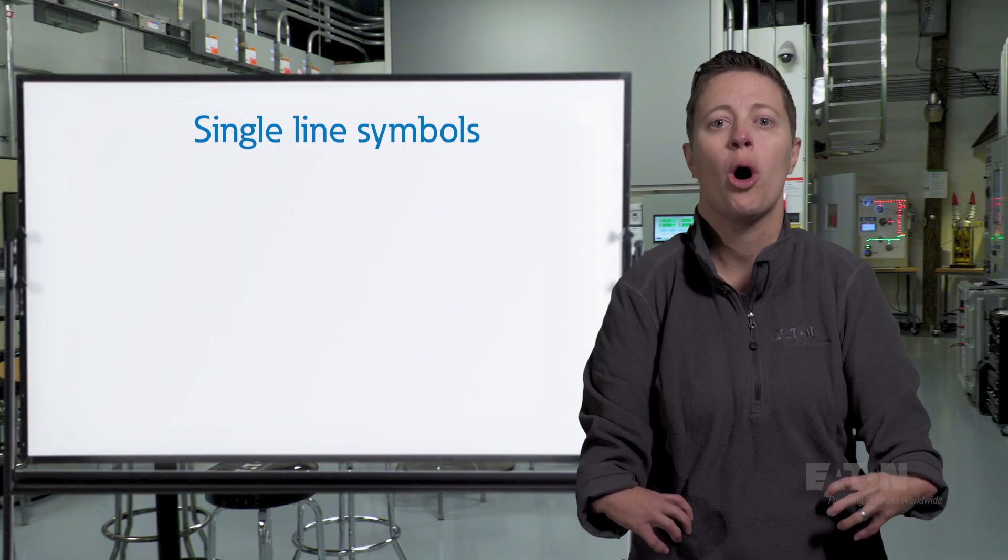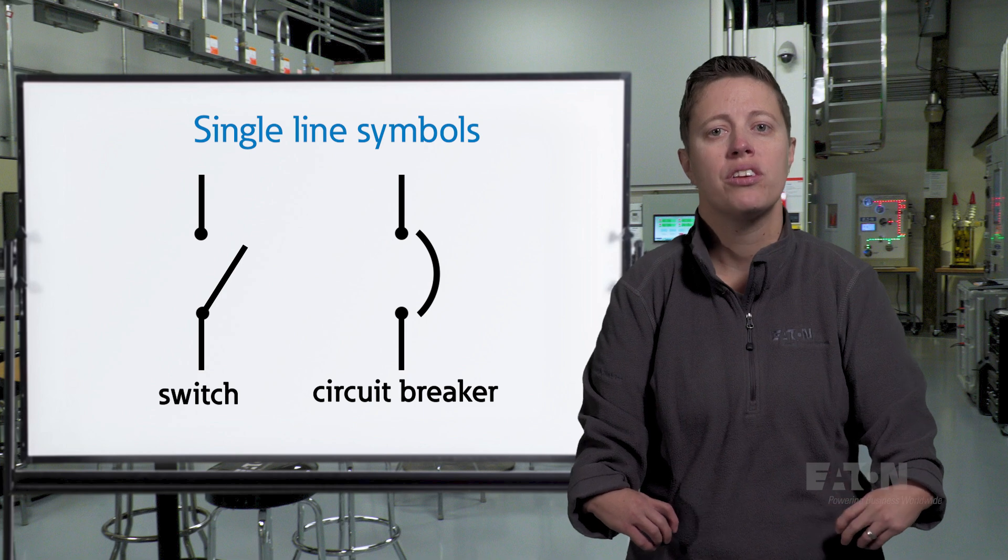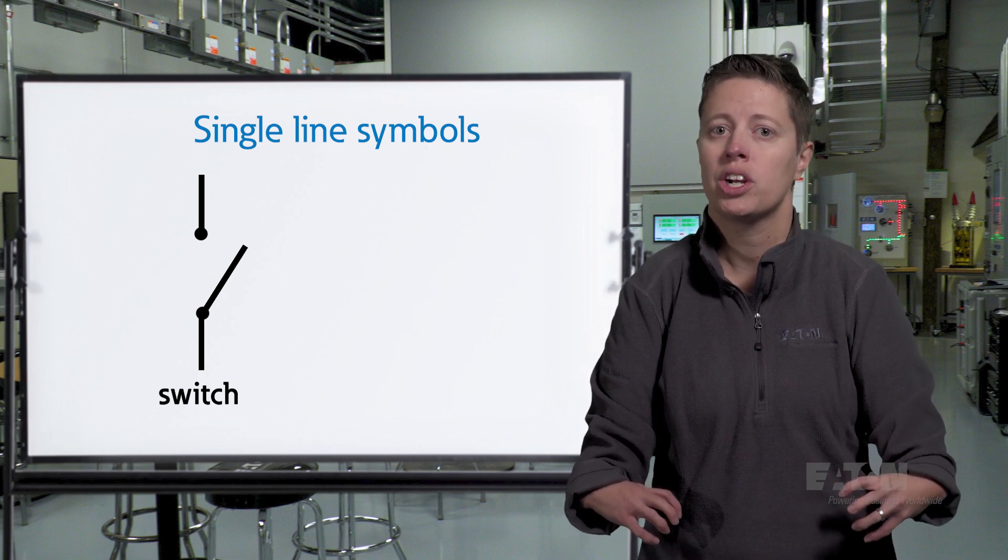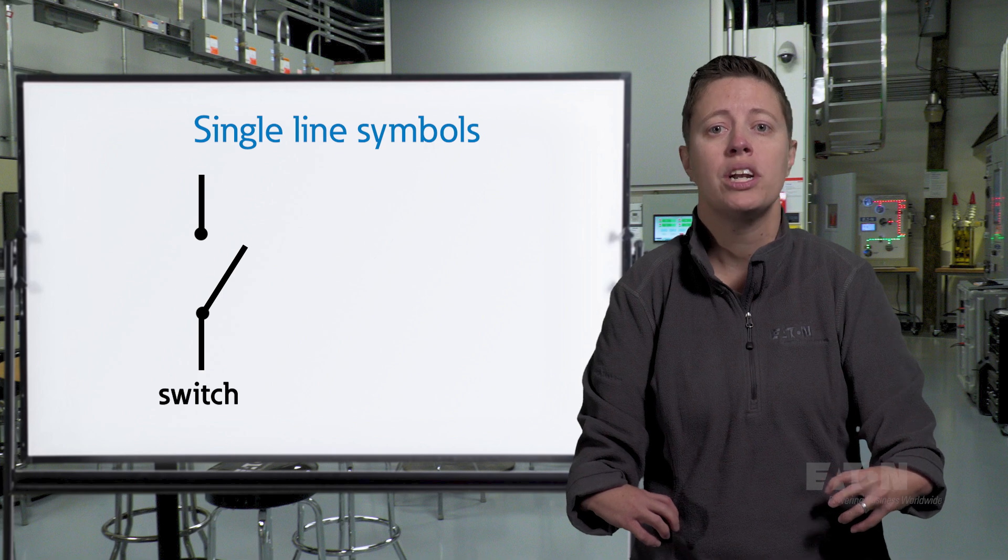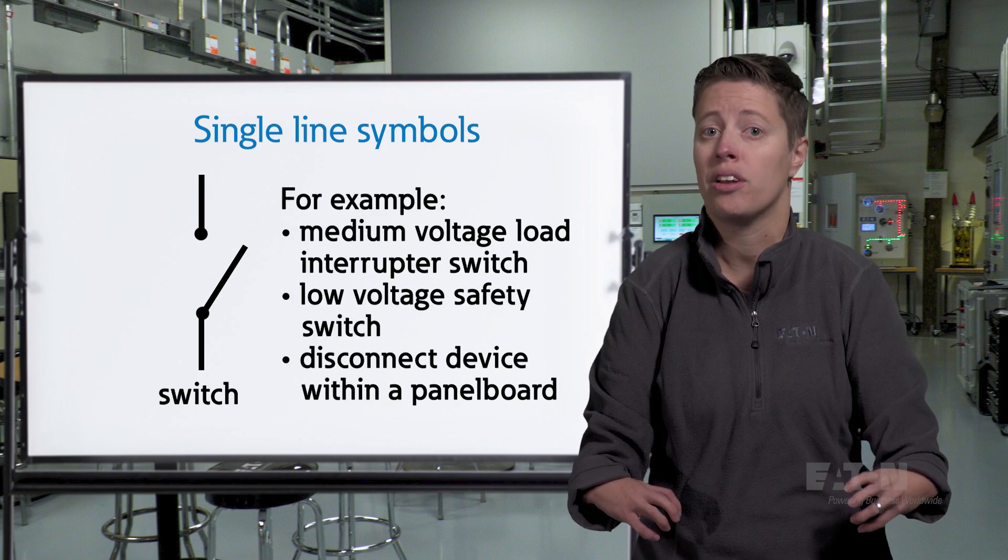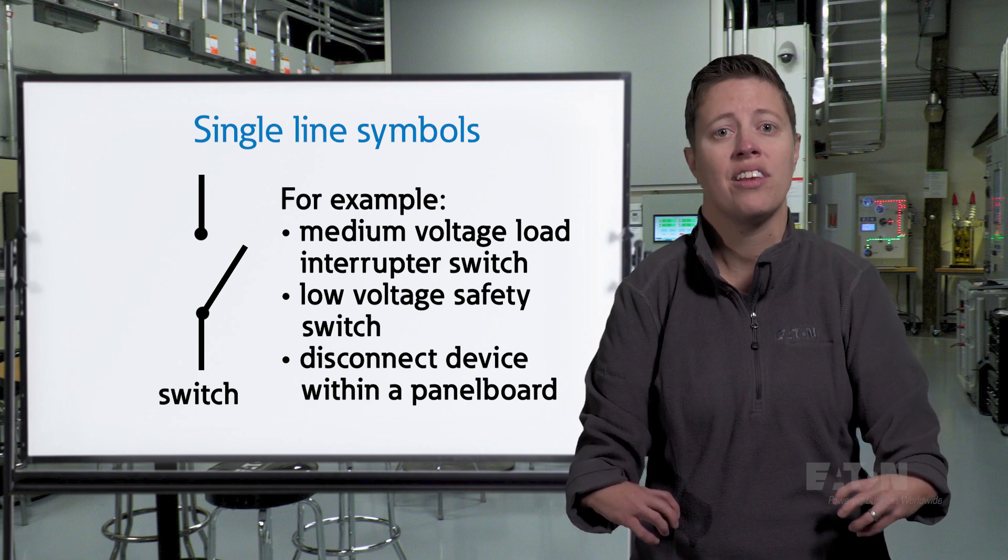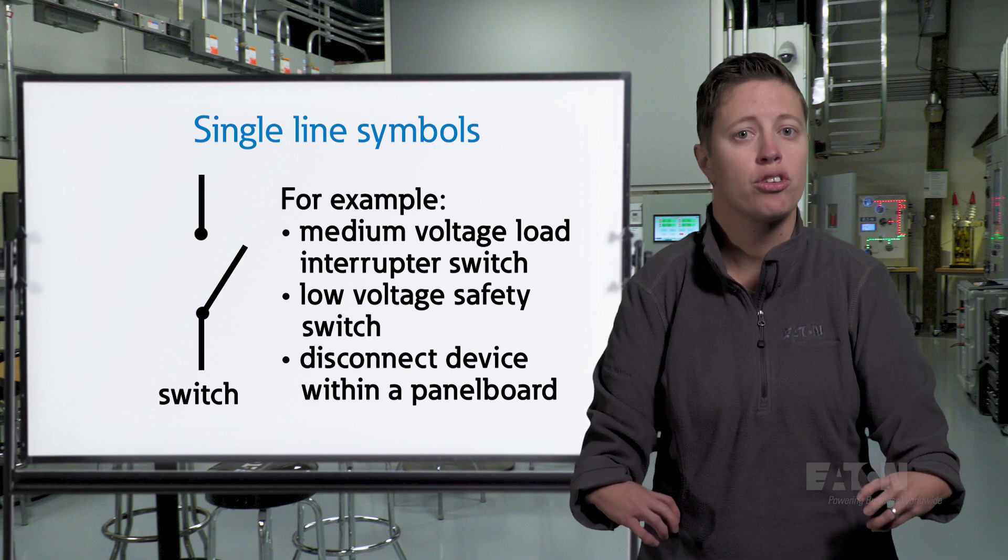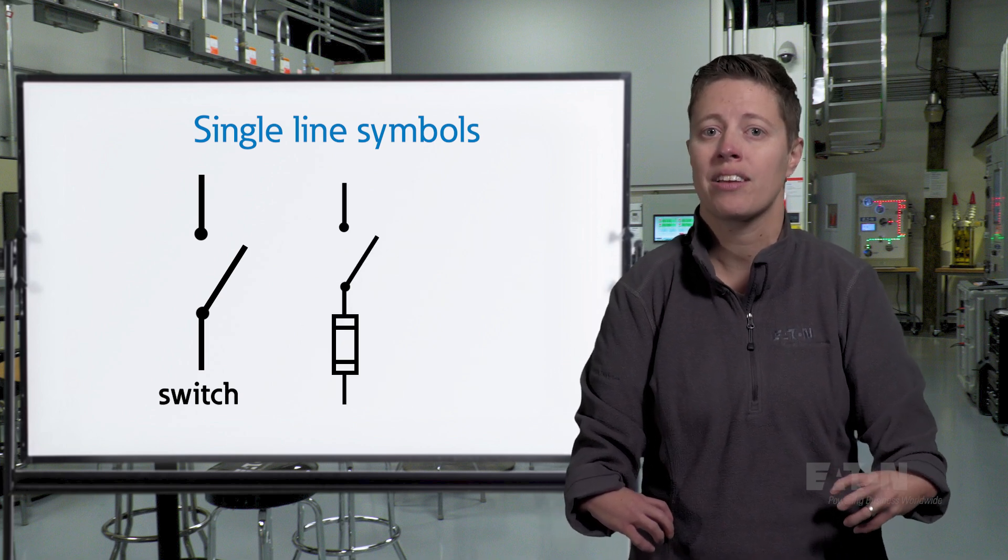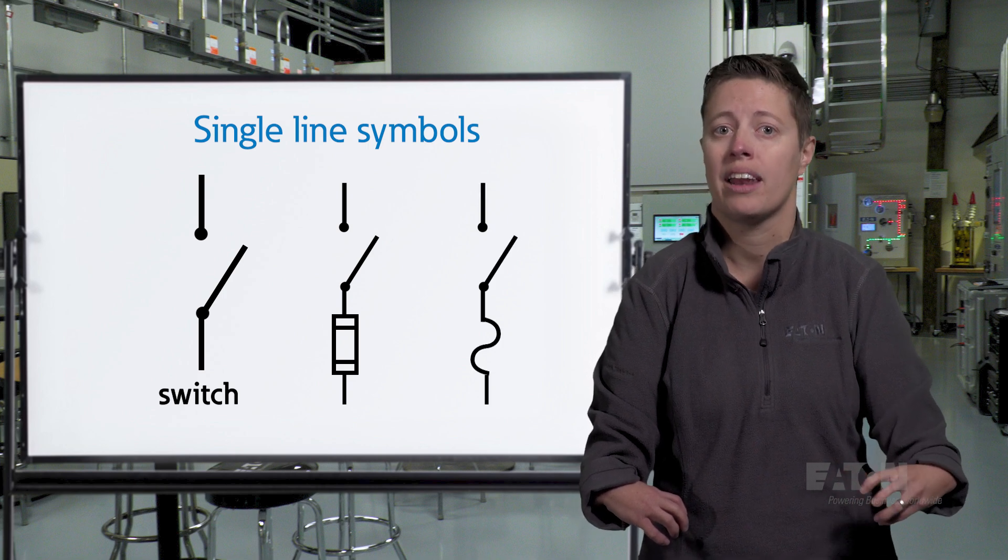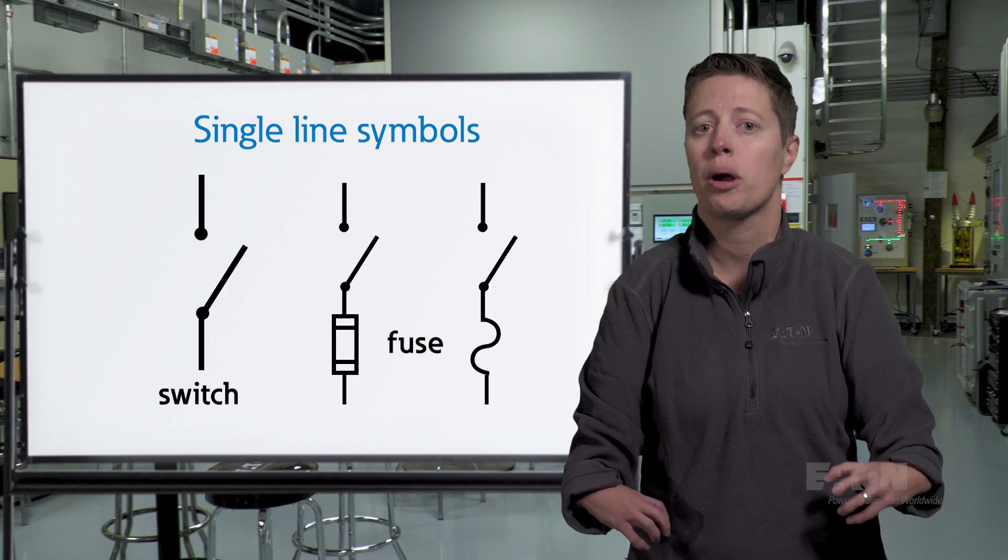There are two types of circuit opening devices commonly found on single lines, switches and circuit breakers. The switch symbol looks like a simple break in the conductor and represents switching devices that can open or close a circuit, typically through manual operation. A switch symbol may represent a medium voltage load interrupter switch, a low voltage safety switch, or perhaps a panel board with fusible switches as disconnect devices. We can check the text notes around the switch for clues about what type of equipment it is. The switch symbol may be accompanied by a rectangle with two lines or by opposing connected semicircles. These symbols represent a set of fuses. Fuses provide overcurrent protection to the system.